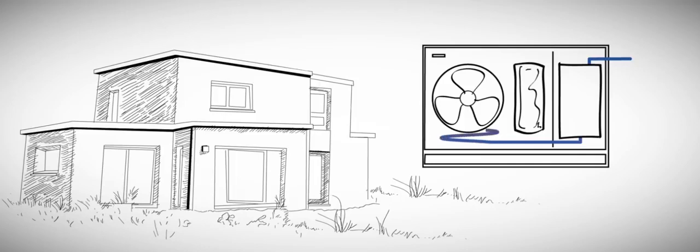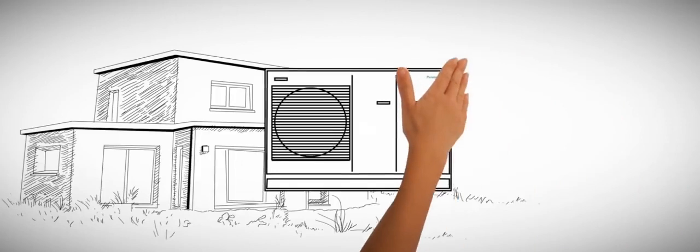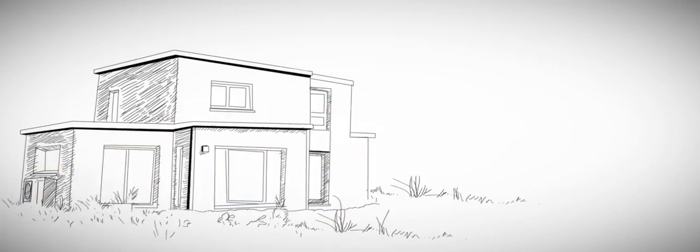Within the heat pump, air full of energy is pushed through the air heat exchanger by the fan. From there, the energy is fed into a highly efficient compressor. Then this energy passes through the water heat exchanger which converts the energy into hot or cold water to heat or cool the home.